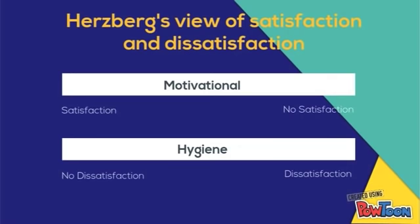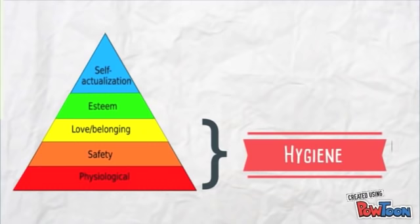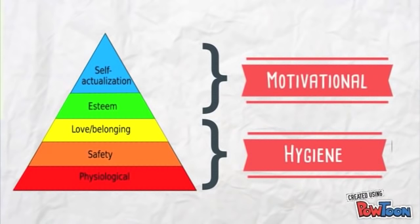This theory resembles Maslow's hierarchy of needs. Everything from physiological, safety, and social needs essentially are hygiene factors, and everything from self-actualization and esteem needs essentially are motivational factors.